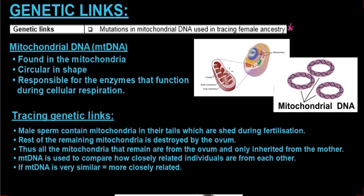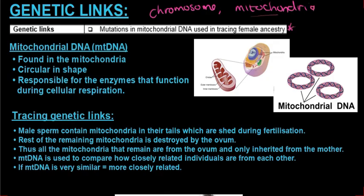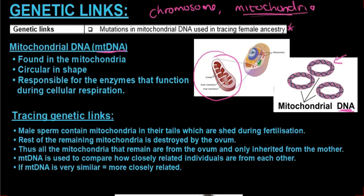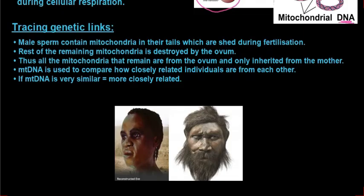What is mitochondrial DNA? When we were busy with DNA, there was theory about where we find DNA in the human body — the answer was in the chromosomes and in the mitochondria. Mitochondrial DNA, also known as mtDNA, is found in the mitochondria. It is circular in shape — not a double helix structure like chromosomal DNA. It is responsible for the enzymes that function during cellular respiration.